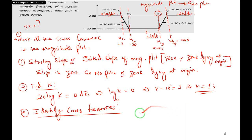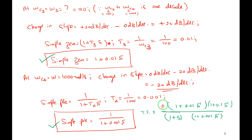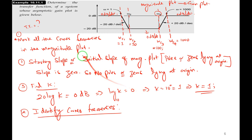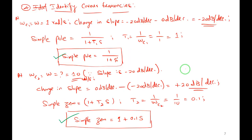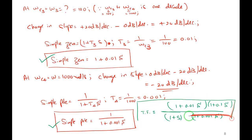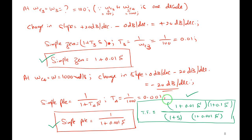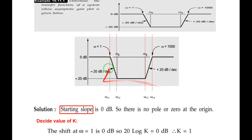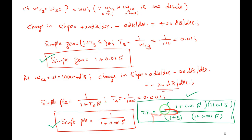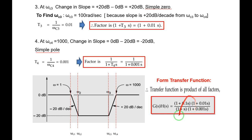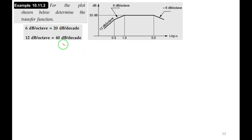At ωc1 = 0.5 rad/s, using slope of +20 dB/decade after ωc1: magnitude = 20·log(0.5) + 32 = −6.02 + 32 ≈ 26 dB. Now working back with the initial slope of +40 dB/decade before ωc1: 26 = 40·log(0.5) + c, so c = 26 − 40·log(0.5) = 26 + 12.04 ≈ 38.04 dB. This y-intercept represents the magnitude at ω = 1 on the initial slope line.